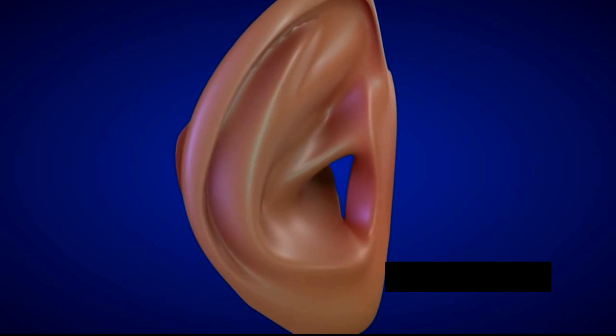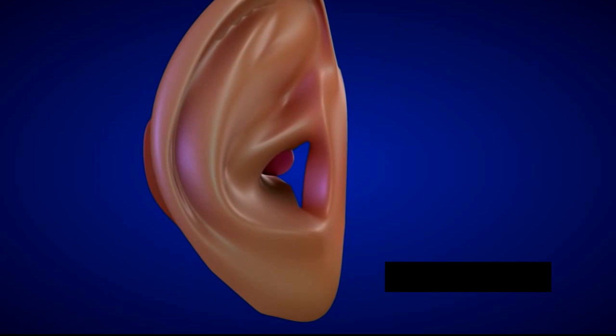The outer part of the ear, composed of the pinna, helixes and other curves, helps funnel vibrations from sound waves into the ear canal, whereas the remainder of the ear tells the brain where the sound source is. This is called sound localization.